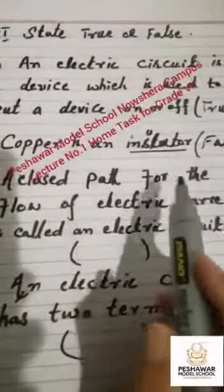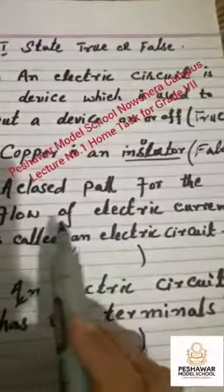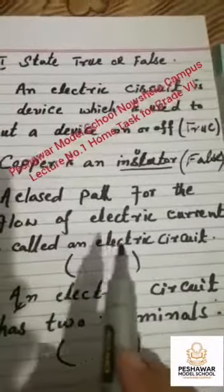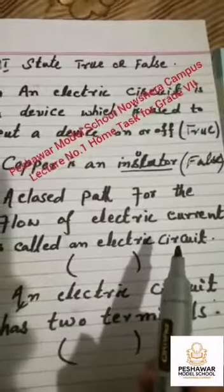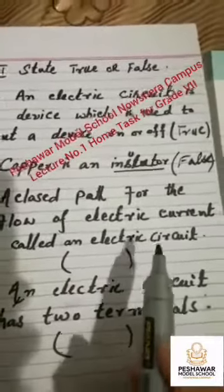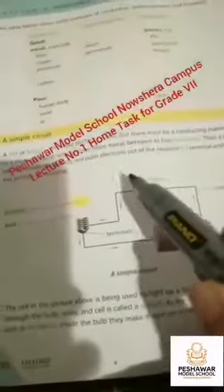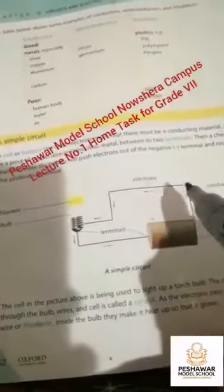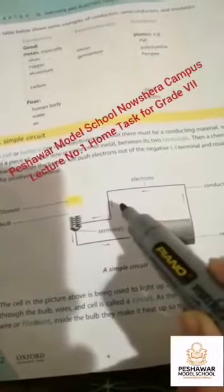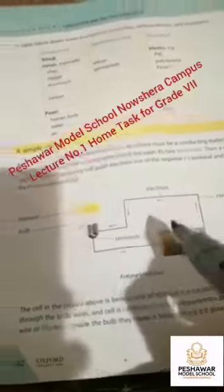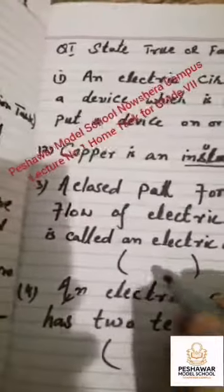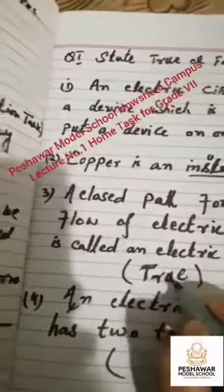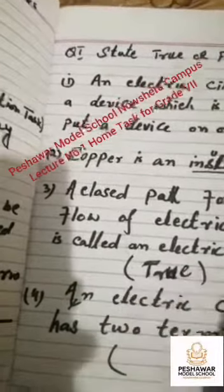Number 3: a closed path for the flow of electric current is called an electric circuit. Look here — this circuit shows a closed path for the flow of electric current. So it is also true.